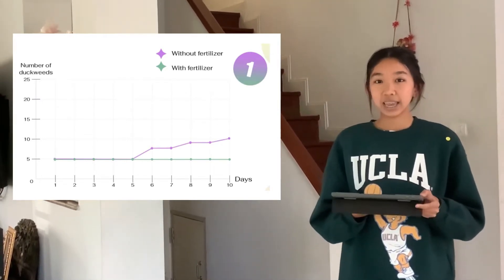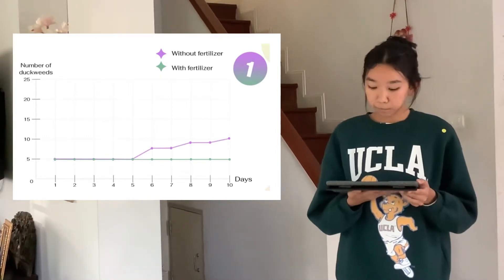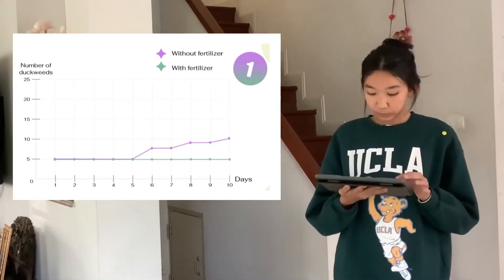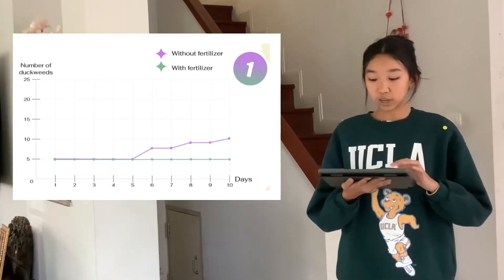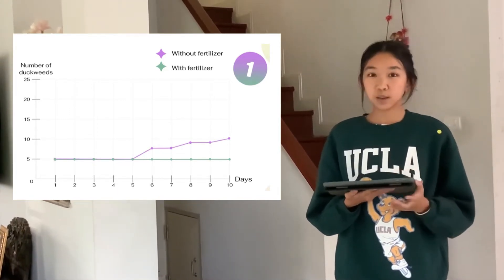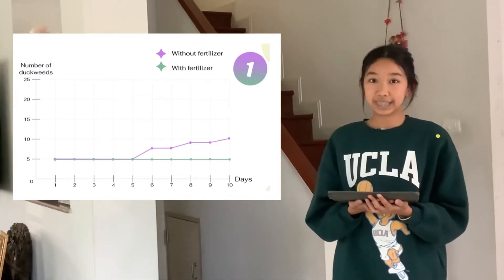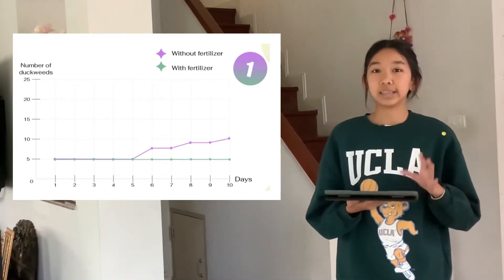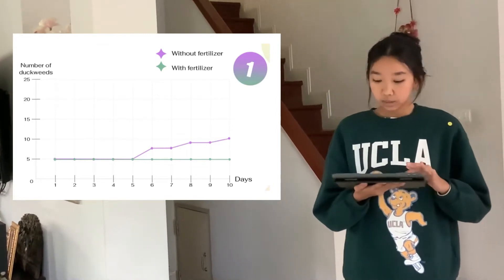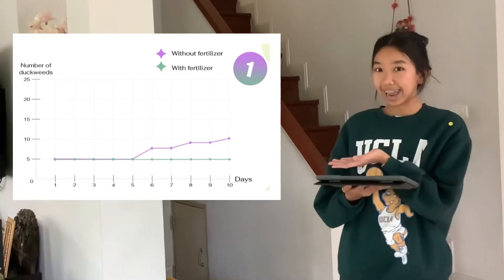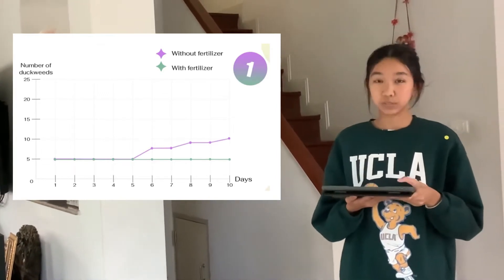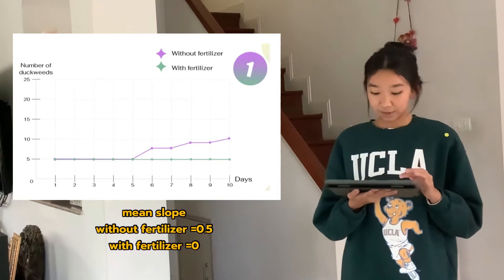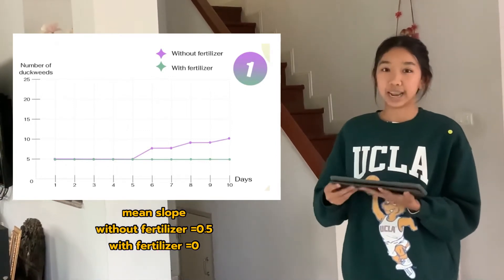When it comes to day 6, they have grown differently. The container without fertilizer grew to 7, but the one with fertilizer didn't grow. After more days, they continued growing differently, and by day 10 — the last day of our experiment — there is a big difference. The container without fertilizer, shown as the purple line, reached 10 duckweeds, but the container with fertilizer stayed the same as day 1, which is 5.